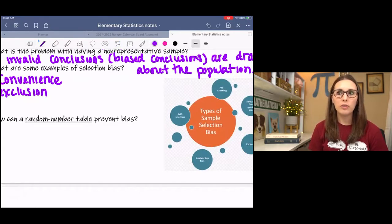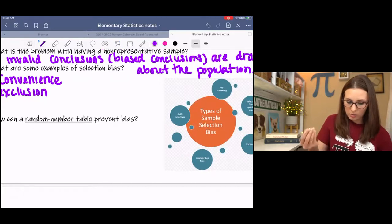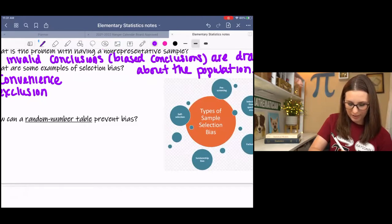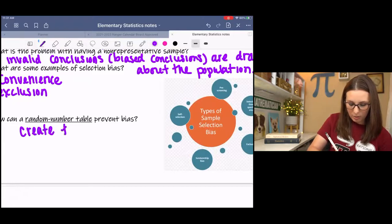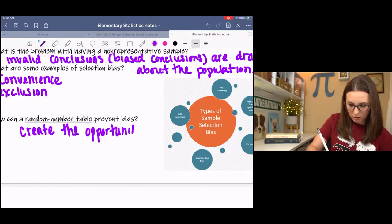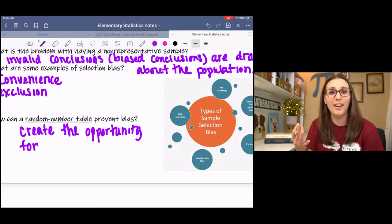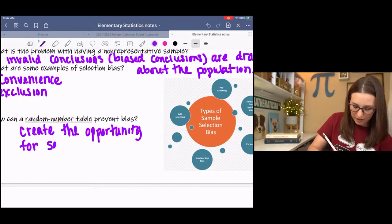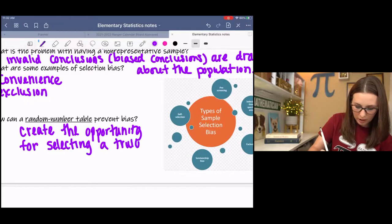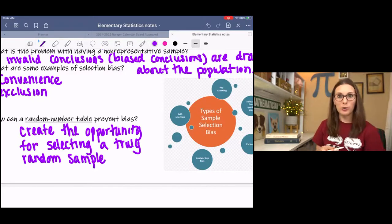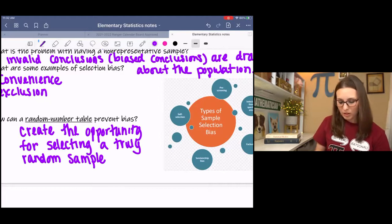And then, in order to prevent bias, selection bias, we have things like random number tables to help us select a truly random sample. And so, these random number tables allow for selecting a truly random sample.